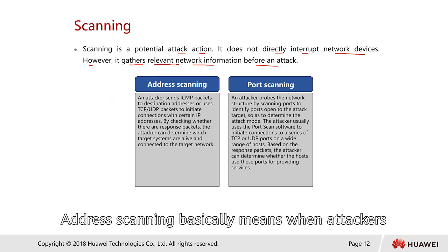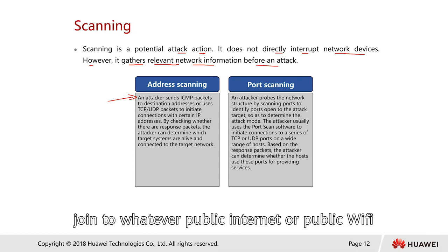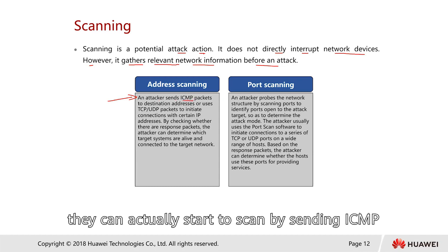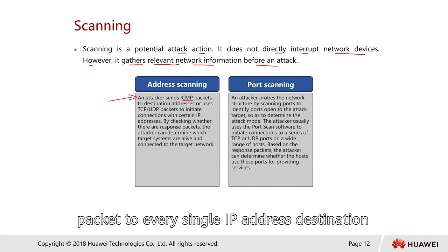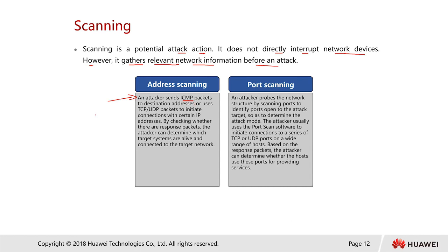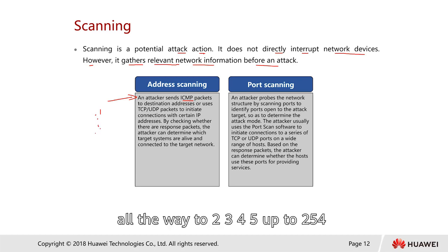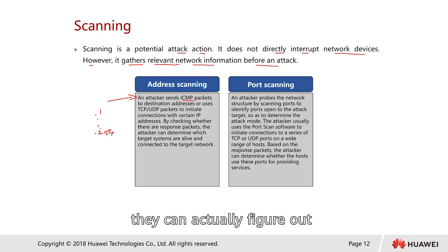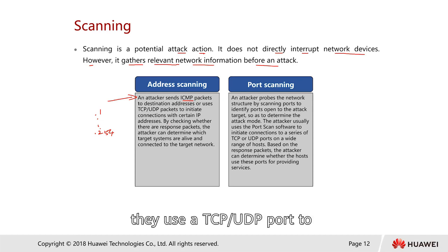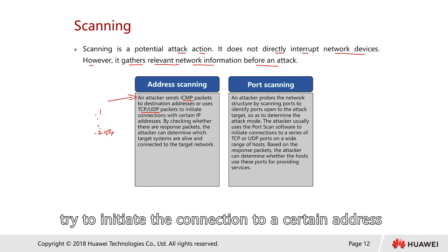Scanning can be divided into two types: address scanning and port scanning. Address scanning means the attacker joins a public Wi-Fi network and sends ICMP packets to every single IP address destination — for example, from dot one all the way to dot 254. Through scanning, they can figure out which IP addresses are online.